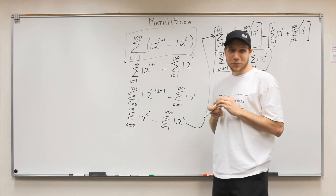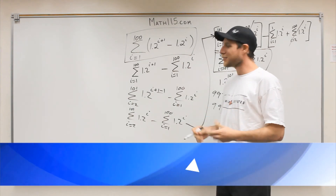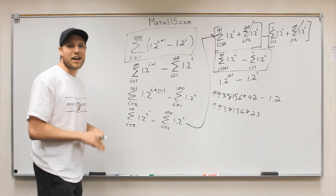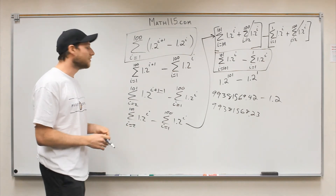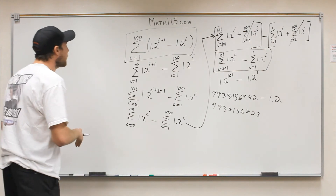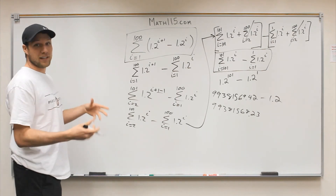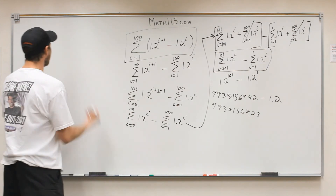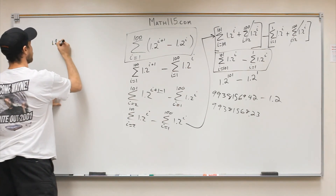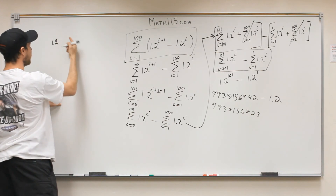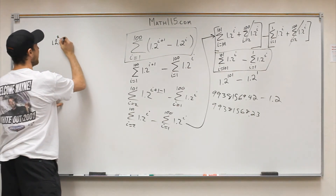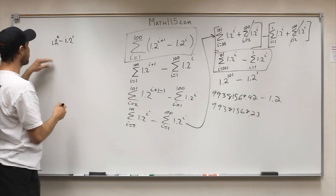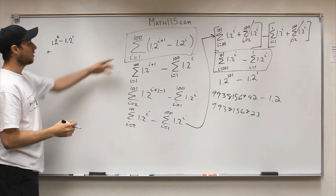If you want an easier way to do it, or to visualize it, here's another approach. The easier way is honestly just to start solving it. You don't need to write out all 100 terms, but if you start doing it and can visualize what's happening, you can use logic and a little bit of math to solve it out. So if we start with i equals 1: 1.2^(1+1), which is 1.2^2, minus 1.2^1, and then that has to be added to the next term where i equals 2.